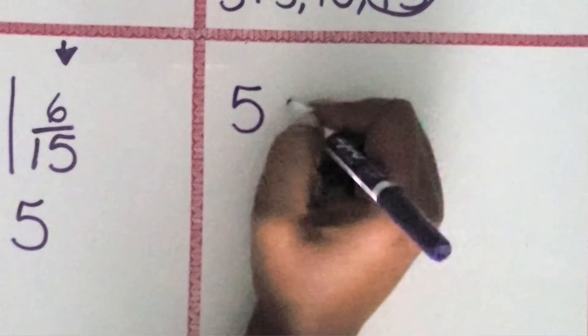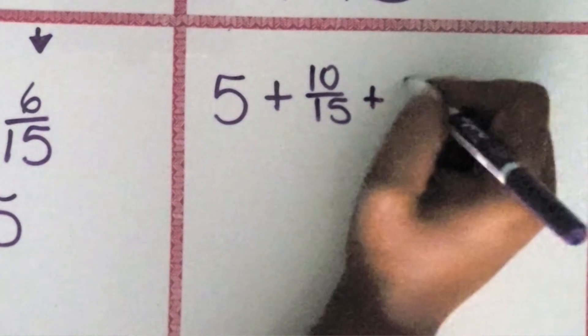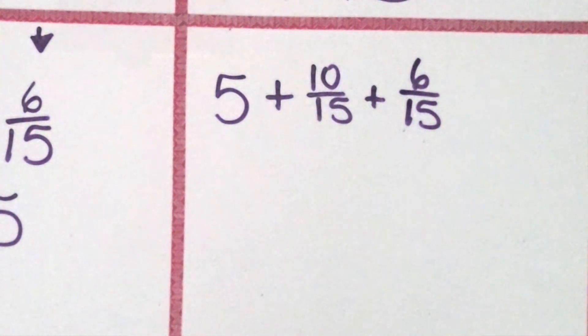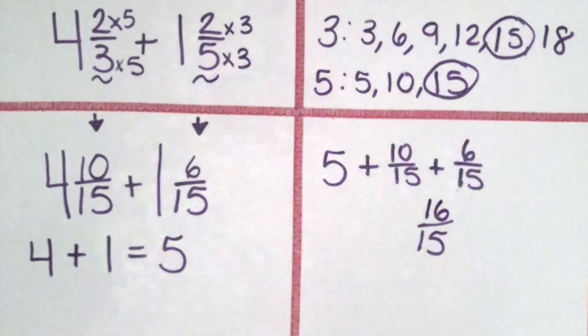So now we have 5 plus 10/15 plus 6/15. 10/15 plus 6/15 is 16/15.